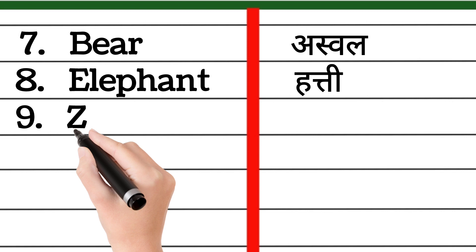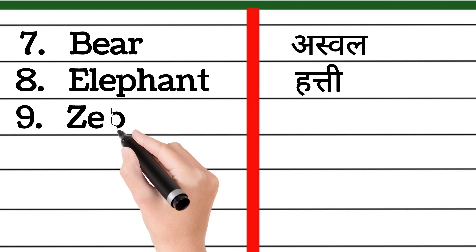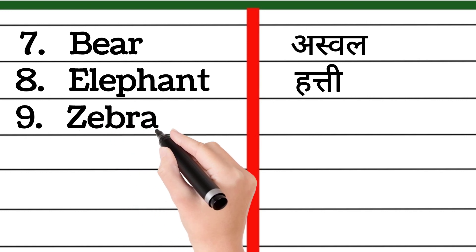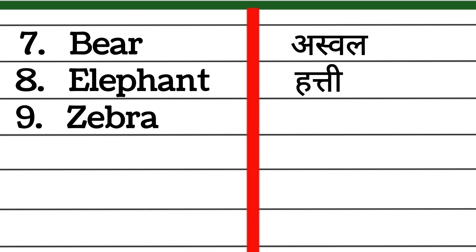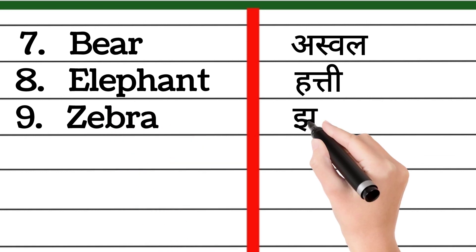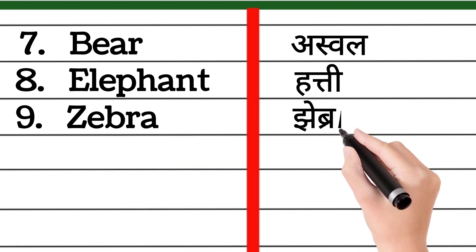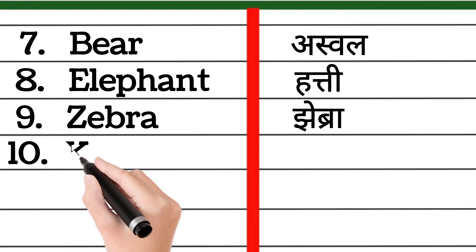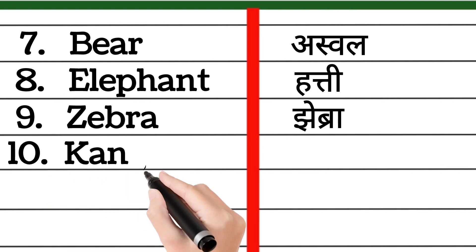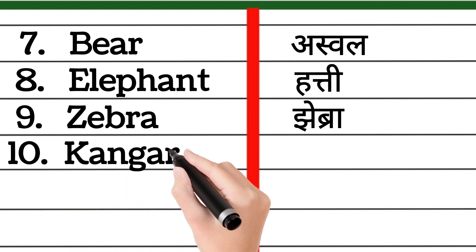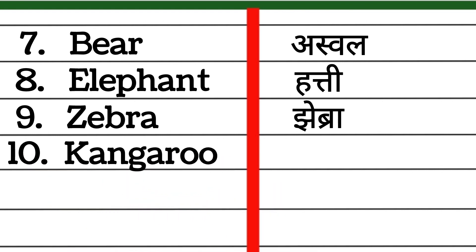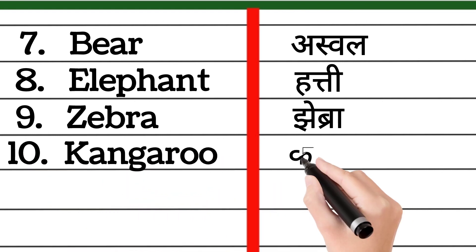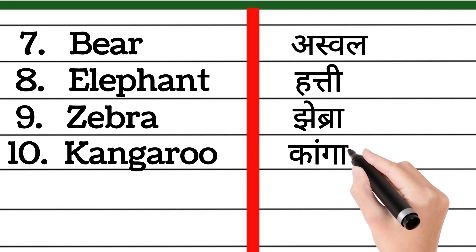Z-E-B-R-A, zebra. Zebra means zebra. K-A-N-G-A-R-O-O, kangaroo. Kangaroo means kangaroo.